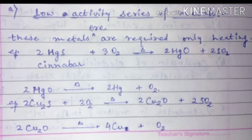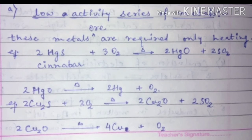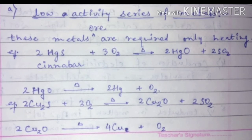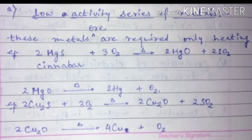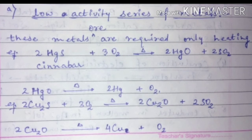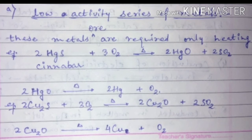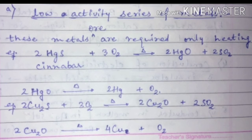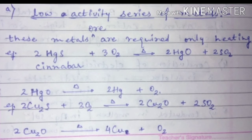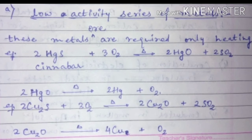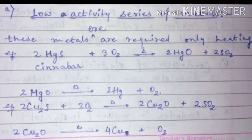For example, on your screen you can see mercuric sulfide (HgS). You heat it with oxygen, it converts into mercury oxide and sulfur dioxide. That mercury oxide then only requires heat to give mercury, and oxygen gas is separated. Similarly, cupric sulfide (CuS) — heat it in the presence of oxygen to get cupric oxide and sulfur dioxide. Then from cupric oxide, applying heat alone converts it into copper and oxygen.